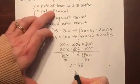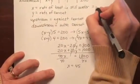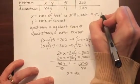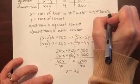That tells me that the rate of the boat in still water is 45 kilometers per hour.